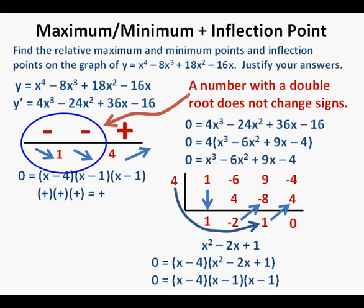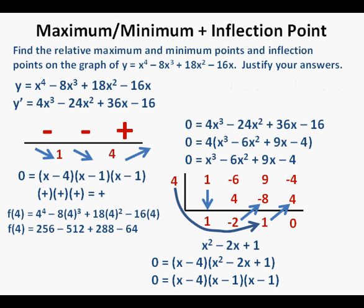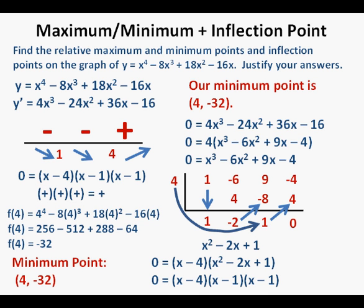To find the point, we plug 4 into the original function: f(4) equals 4 to the fourth minus 8 times 4 cubed plus 18 times 4 squared minus 16 times 4, which gives us 256 minus 512 plus 288 minus 64. So f(4) equals negative 32, and our minimum point is at 4 comma negative 32.